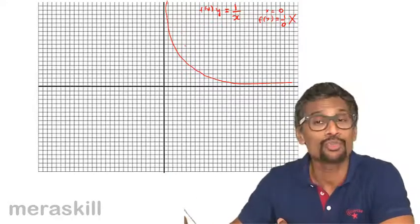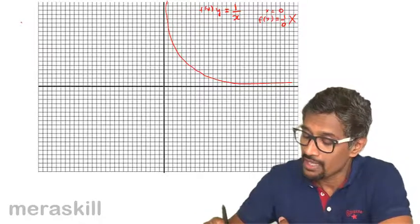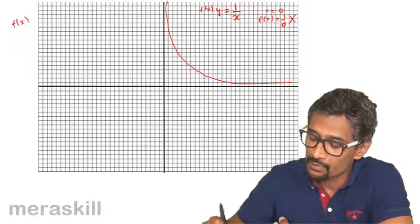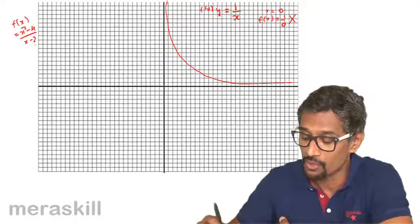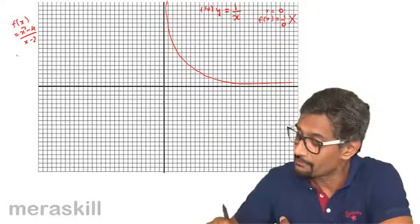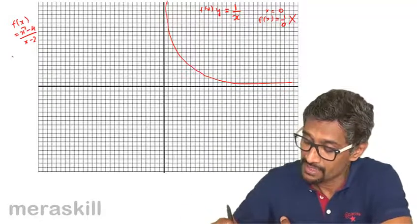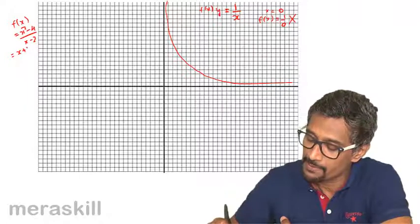This is how we can show it in the form of graph. Similarly, let's say we talk about f of X is equal to X square minus 4 upon X minus 2. We draw those graphs also. You will find that you will get various values. This became ultimately X plus 2.